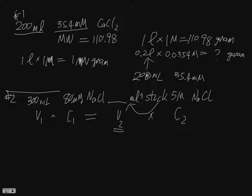There's a unit conversion here. You have 80 micromolar here and 5 molar for the stock, so you need to convert this. It'll be 300 milliliters times 80 times 10 to the minus 6 molar equals V2 times 5 molar, and then you just find out the V2.